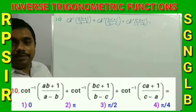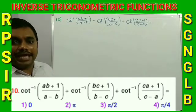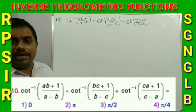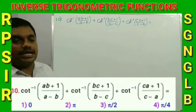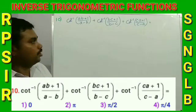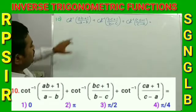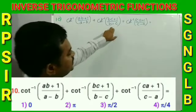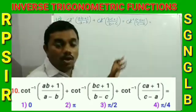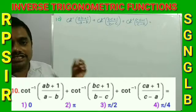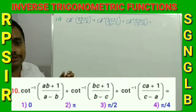Number 10: Evaluate cos⁻¹((ab+1)/(a-b)) + cos⁻¹((bc+1)/(b-c)) + cos⁻¹((ca+1)/(c-a)). Observing the cyclic order in the denominators a-b, b-c, c-a, the answer is 0 by symmetry. Option 1 is the correct answer.